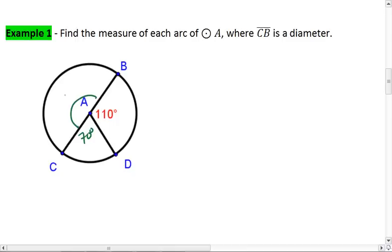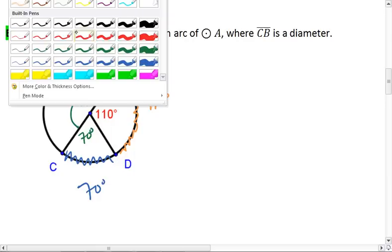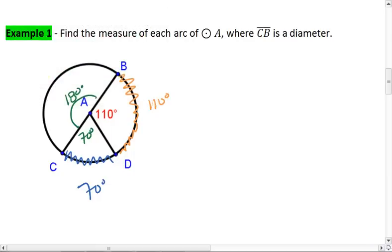And that means that this angle right here is 180 degrees. That tells me that my arcs are 110 degrees, 70 degrees, and 180 degrees.